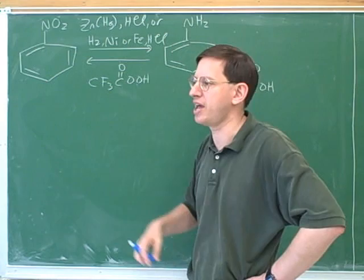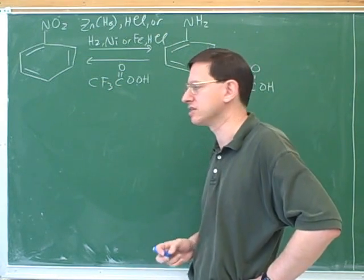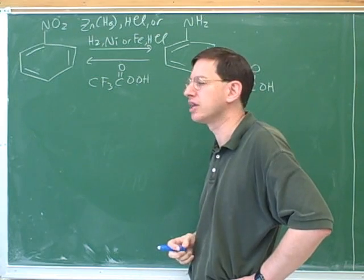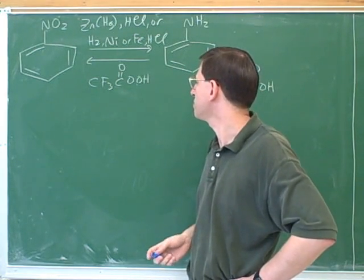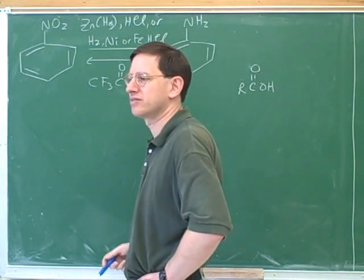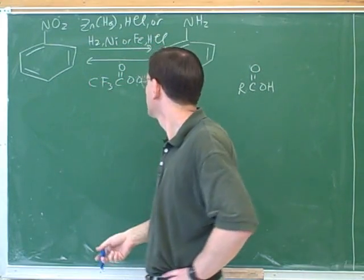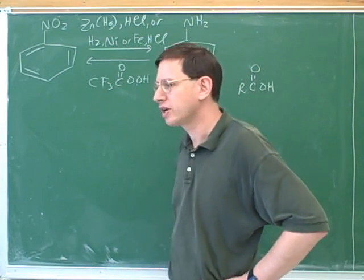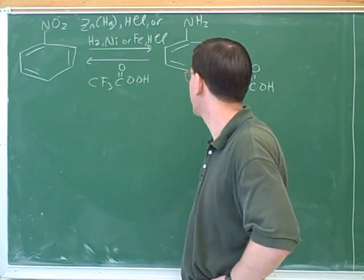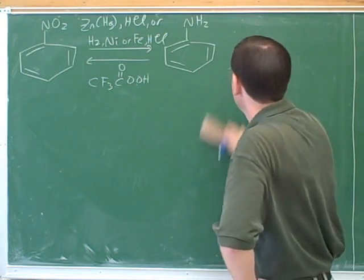We've seen a bunch of times over the course that we can use per acid to do oxidations. In the past, we used per acids like MCPBA to make epoxides out of alkenes. Here's another situation where we're using a per acid for an oxidation. This would be trifluoro peracetic acid. So we shouldn't be surprised if this is an oxidizing agent.